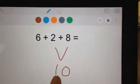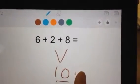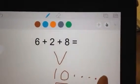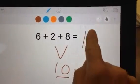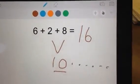So I'm going to say 10, 11, 12, 13, 14, 15, 16. And my total is 16. Let's do one more.